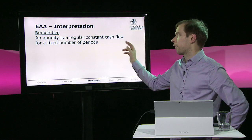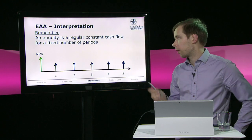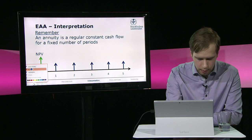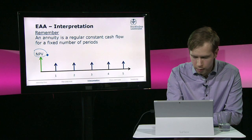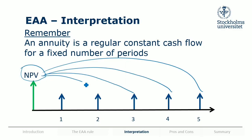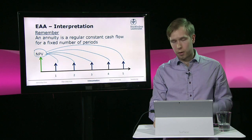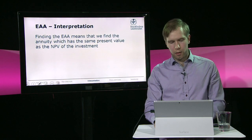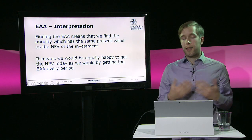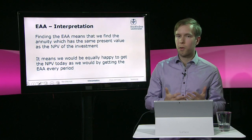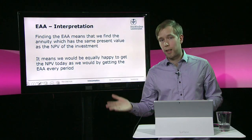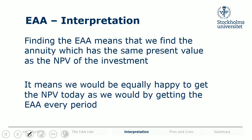An annuity is a regular constant cash flow for a fixed number of periods. What we did was take the NPV and convert it to cash flows of equal size every year, which have a present value corresponding to that NPV. It's a way of taking the NPV and making it into annual positive cash flows — if it's a positive NPV — so that you can compare investments when they have different lifespans. Getting that EAA sum every year for the entire life of the investment would make us equally happy to receiving the NPV today.